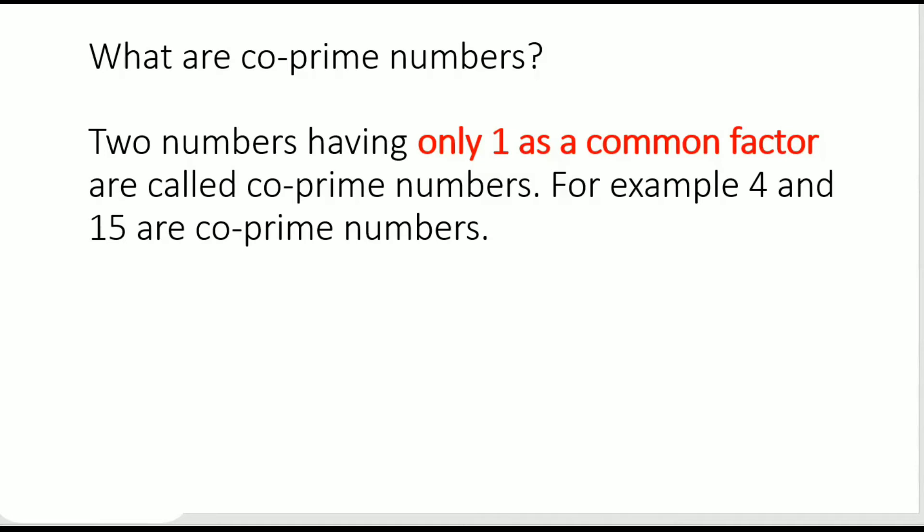That means given two numbers or three numbers, if we get only one as a common factor, then these two numbers are called co-prime numbers. For example, 4 and 15 are co-prime numbers.